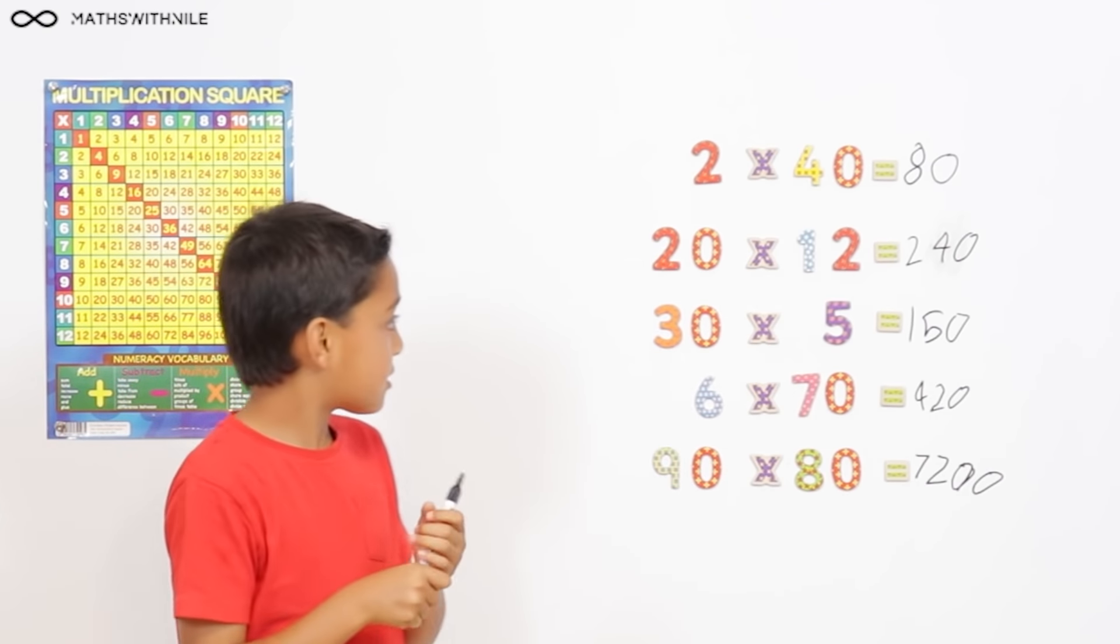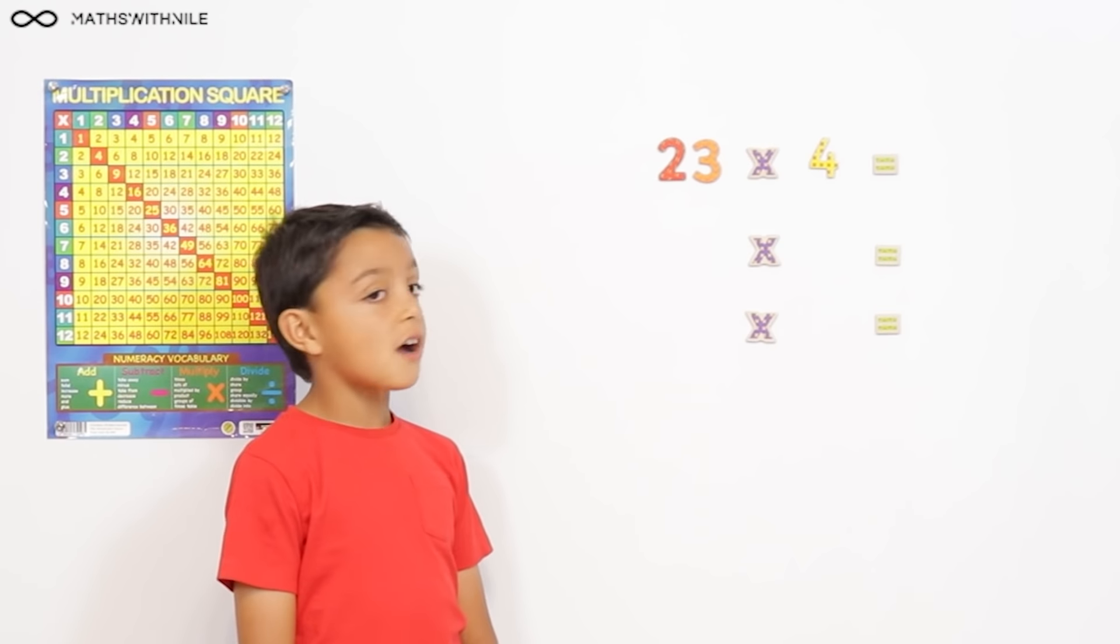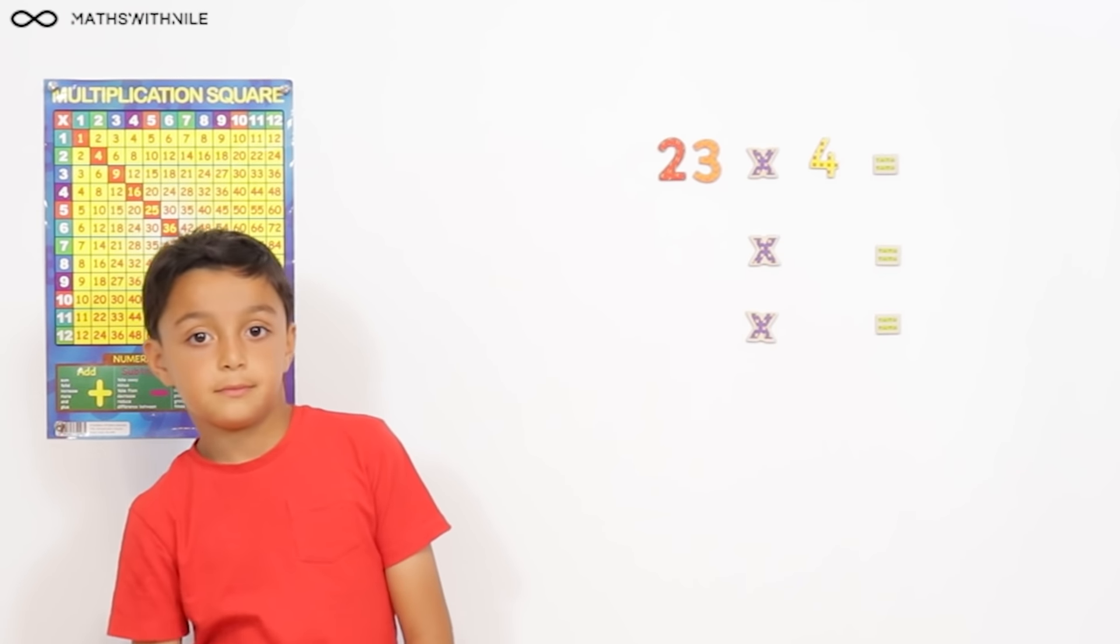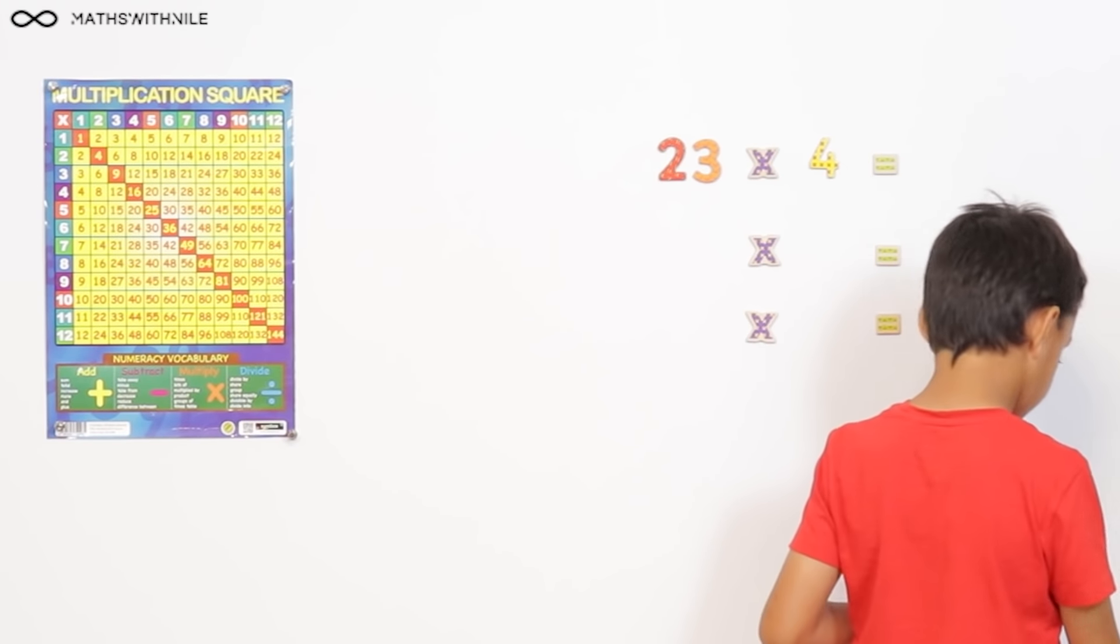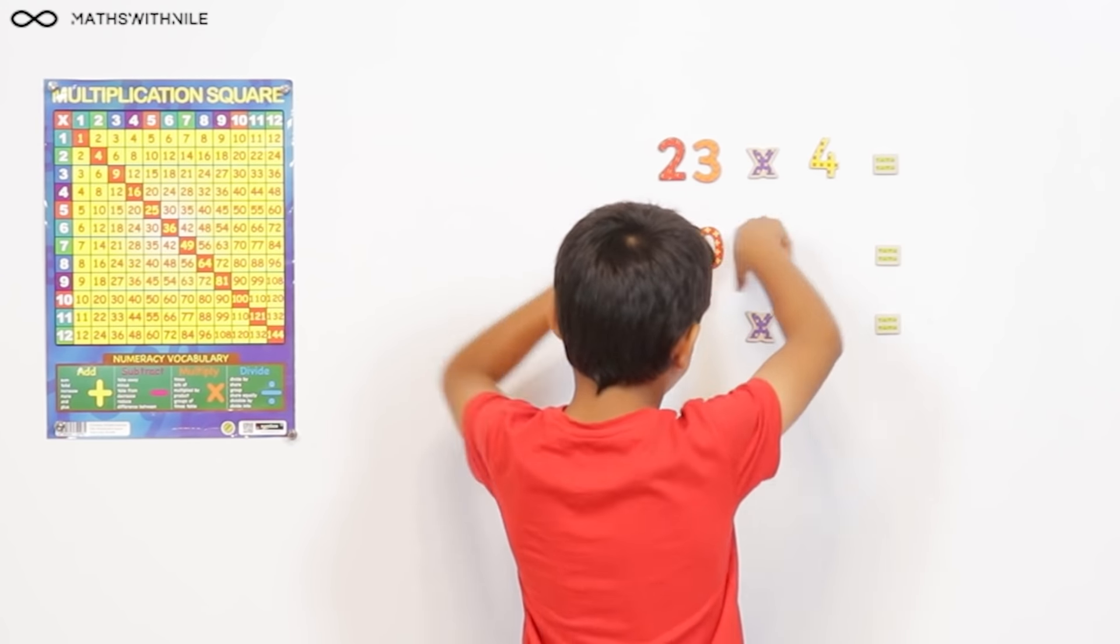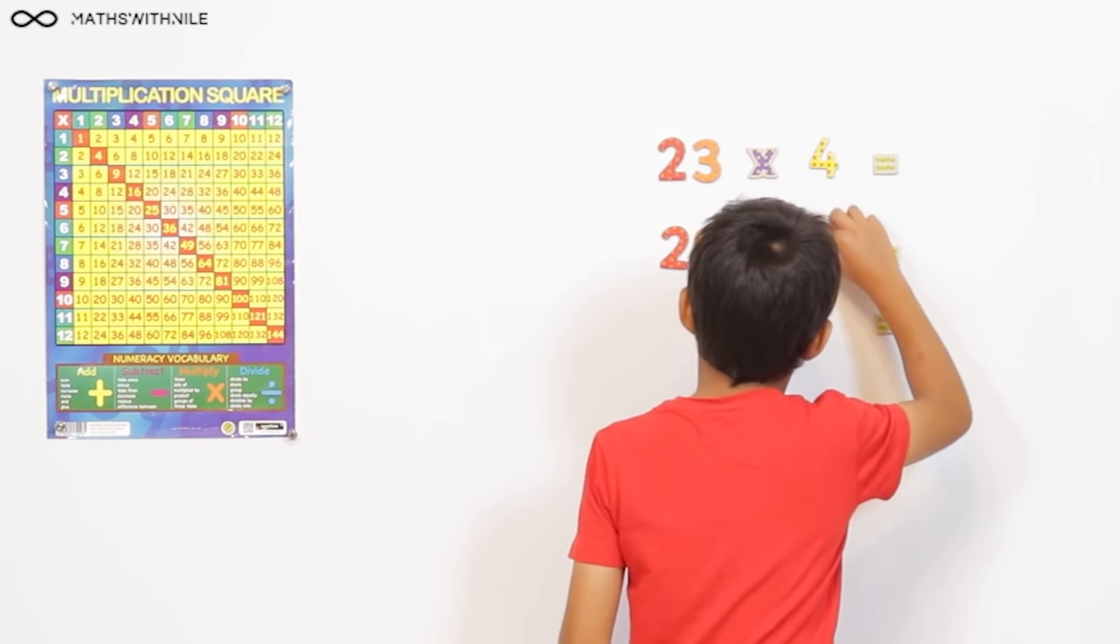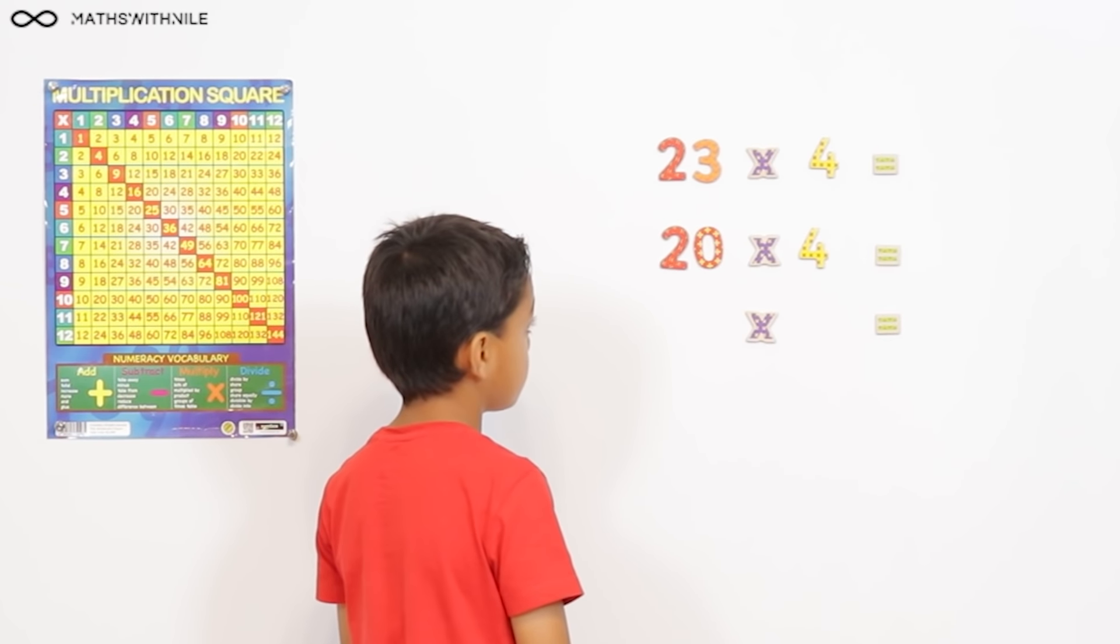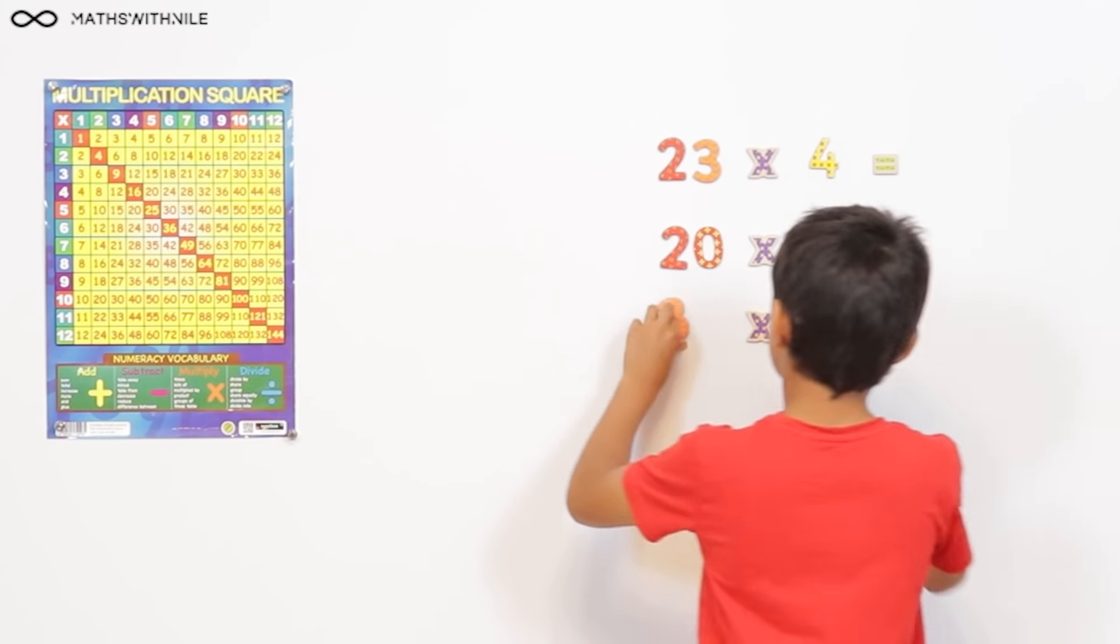Okay, we've got one more section to do. Okay. What's that question on the board? 23 times 4. How many 10s does 23 have? 2. And what's the value of 2 tens? 20. So, can you get 20 for me from the numbers? Put it under the 23. And let's times that 20 by 4. So, can you get 4 for me? Brilliant. So, we have 20 out of the 23. How much is missing? How many units do we have? 3. So, can you get the 3 units? And we're going to times that by 4 as well.